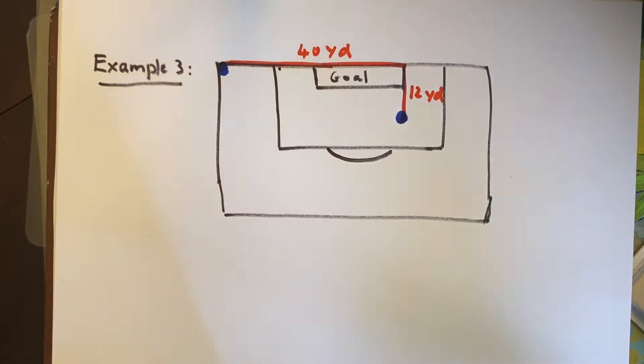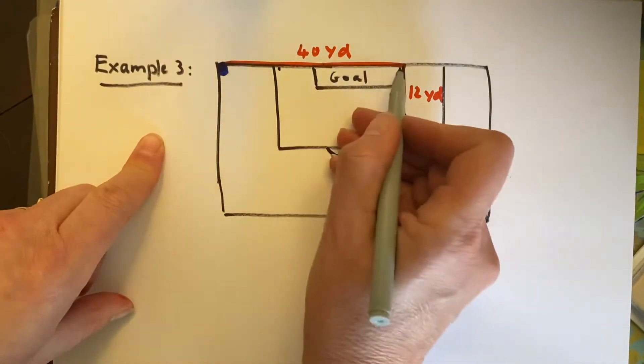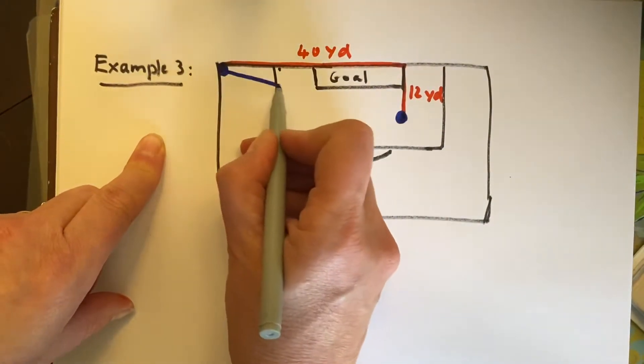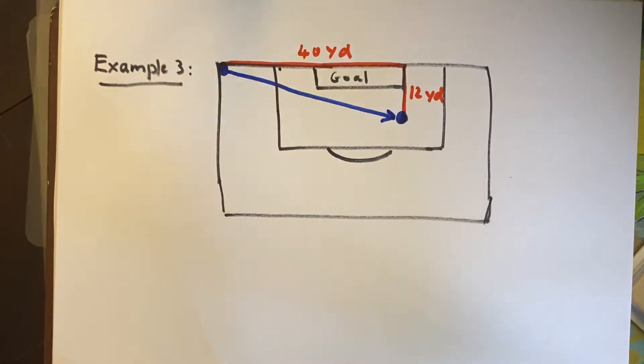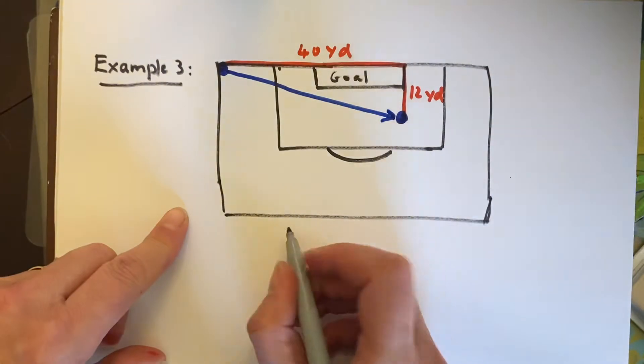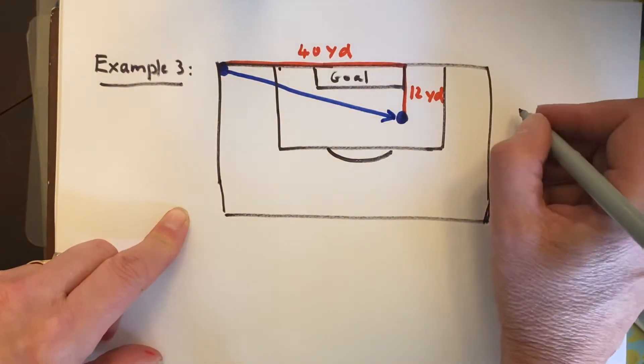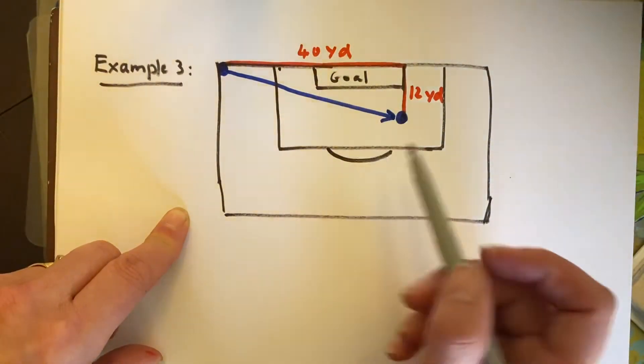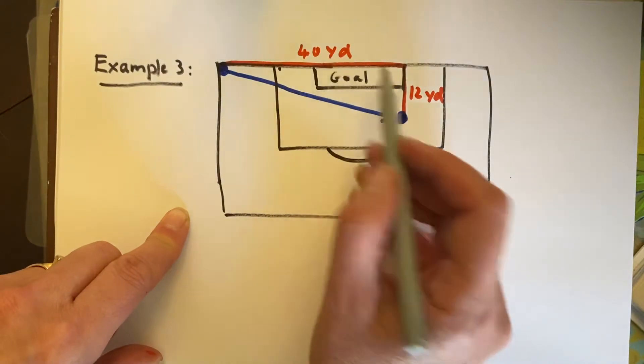Well to do that, I'm going to draw a hypotenuse to this triangle. And you can see that it forms a right triangle. And so we're going to use the Pythagorean theorem. And we know by the Pythagorean theorem that this is the hypotenuse. This is a leg. This is a leg.